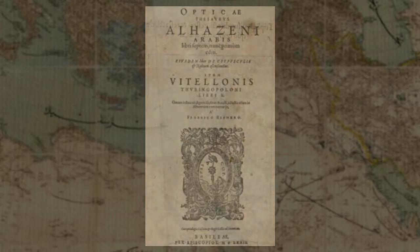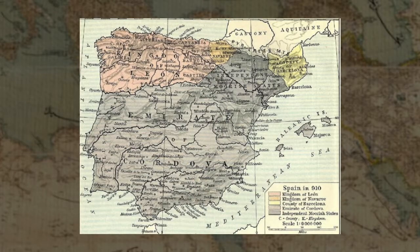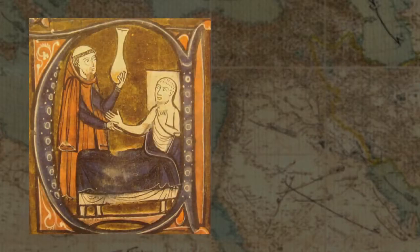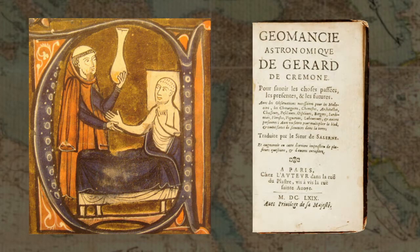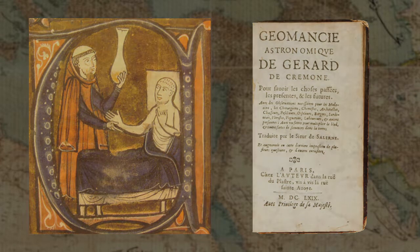Throughout the 12th century, the Book of Optics was distributed to libraries in Muslim Iberia, then known as Al-Andalus, which was a haven where different cultures and religions were able to freely exchange ideas, making it one of the intellectual capitals of the world at the time. This intercultural exchange enabled European scholars, such as Italian translator Gerard of Cremona, to visit these libraries in the 12th century and translate many works from Arabic into Latin, including al-Haytham's on paraboloidal burning mirrors. More importantly, an anonymous scholar from Gerard of Cremona's translation house translated al-Haytham's Book of Optics from Arabic into Latin.